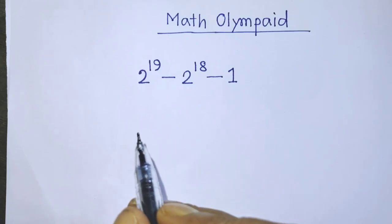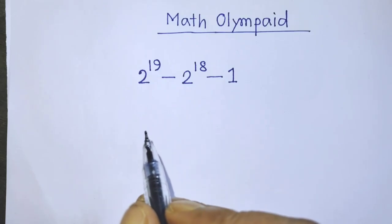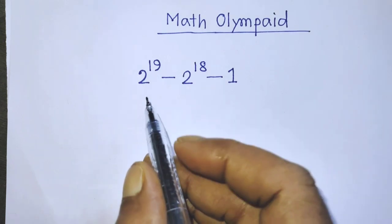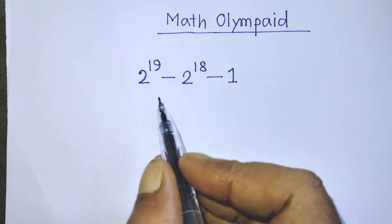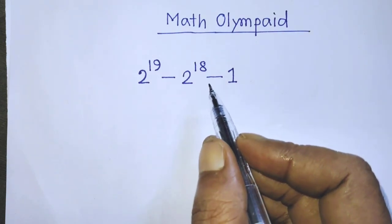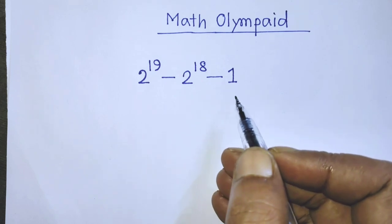Hello guys, you are welcome to solve this math problem, which is 2 to the power 19 minus 2 to the power 18 minus 1.